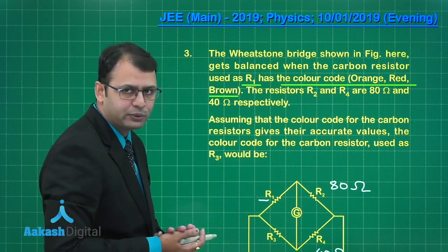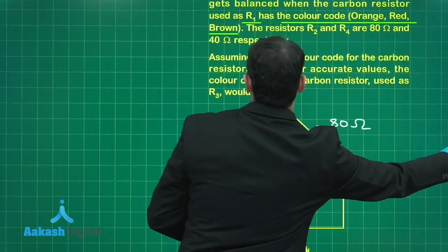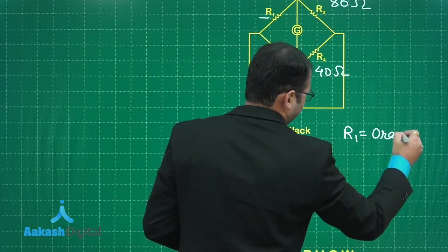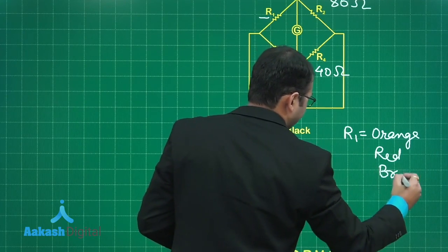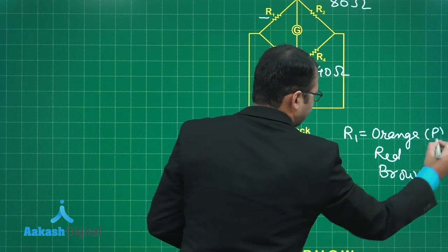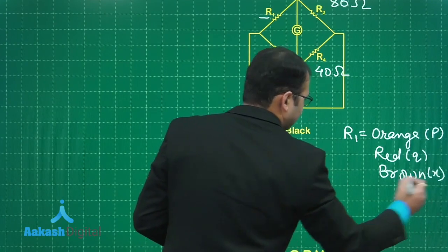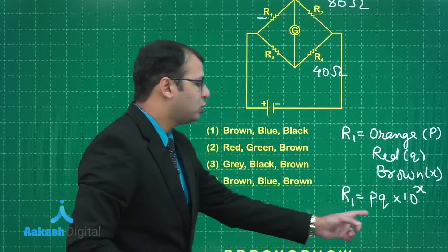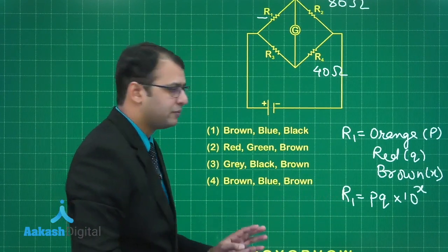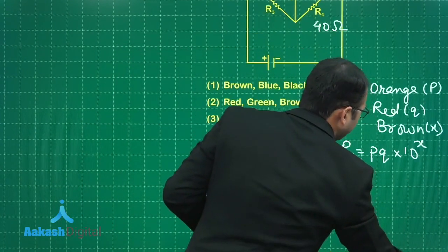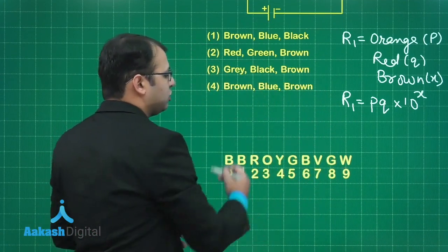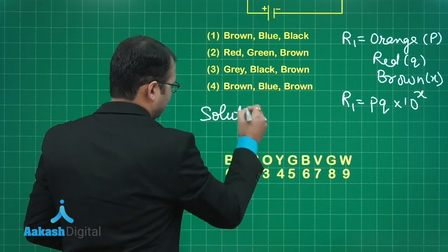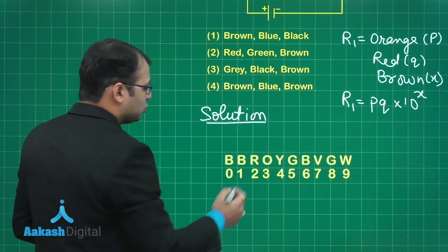First we have to know what is the value of R1 and in the balance state the ratio of R1 and R3 should be equal to R2 and R4. So first of all let's find what orange, red, brown gives for resistance of R1. Let's take this as P, this as Q, and this as X. Then R1 will be represented as PQ into 10 to power X. P and Q should not be multiplied together, it's a symbolic representation.